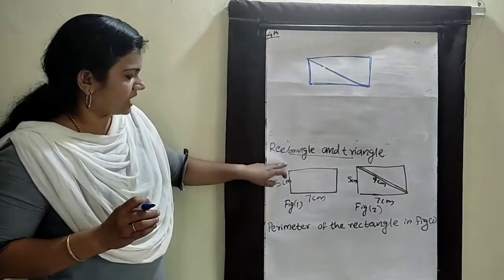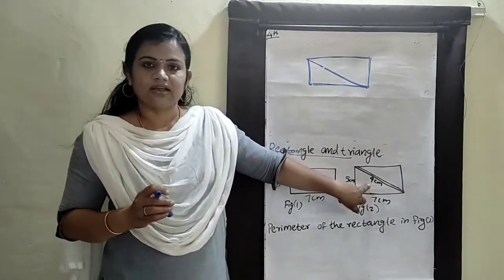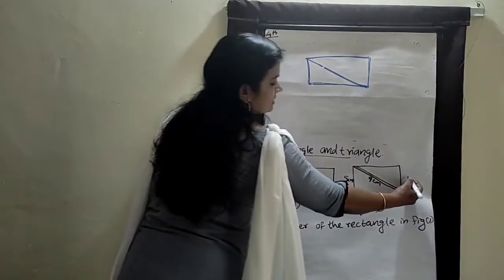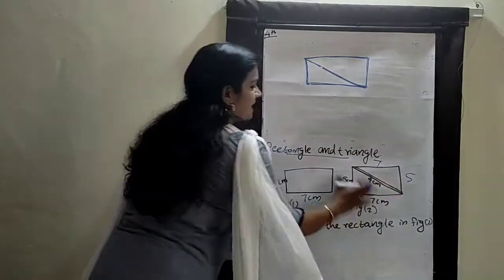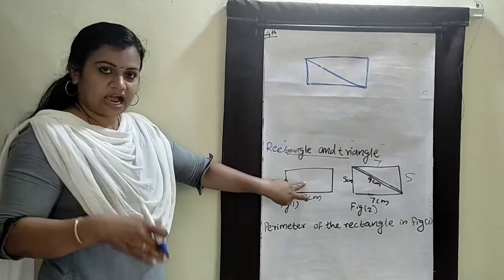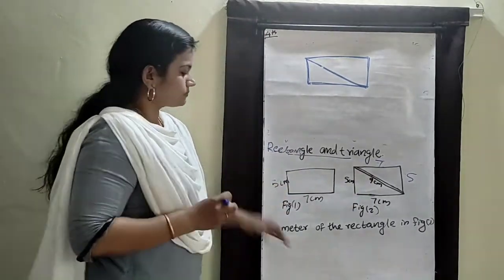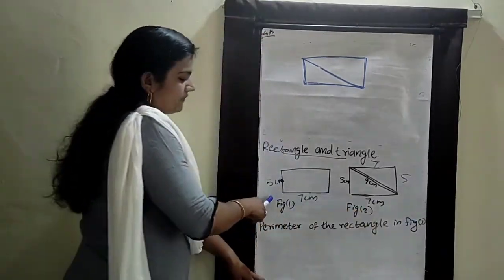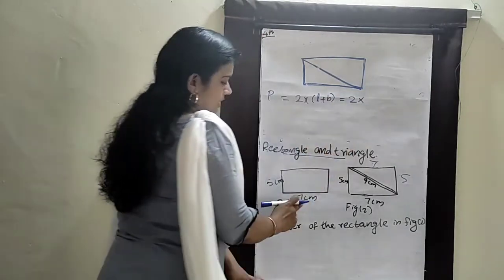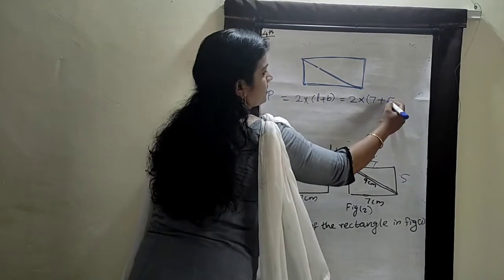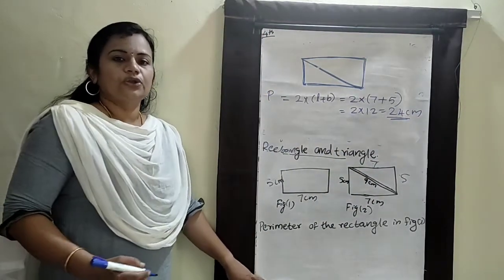So in one rectangle, drawing a corner-to-corner line gives two equal triangles. In this figure, one triangle has dimensions 7 centimeters and 5 centimeters, and drawing the diagonal gives 9 centimeters. So the sides are 5 cm, 7 cm, and 9 cm for each triangle. We need to find the perimeter of this rectangle and the perimeter of these triangles. We already know that perimeter P equals 2 into length plus breadth, which is 2 into 7 plus 5 equals 2 into 12 equals 24 centimeters.